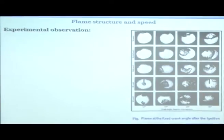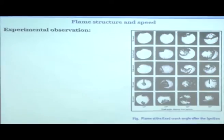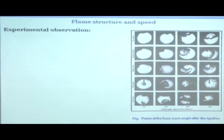The flame front at 10, 15, 20, and 25 degrees after ignition shows the flame front moving in one direction. In the no-swirl condition, there is a very quiescent flame front with hardly any effect of turbulence or swirl.